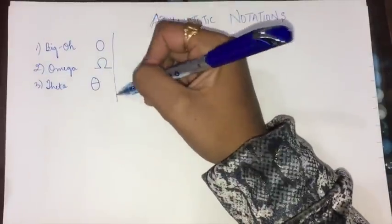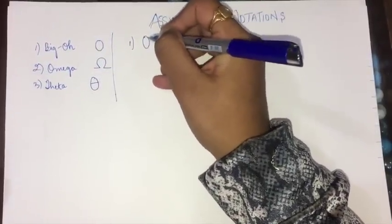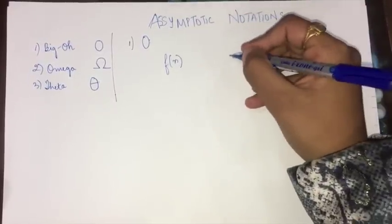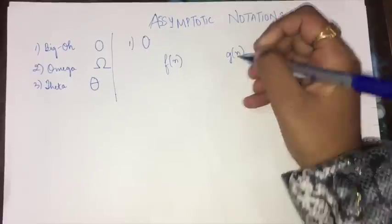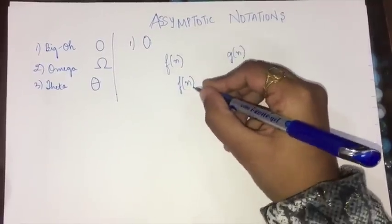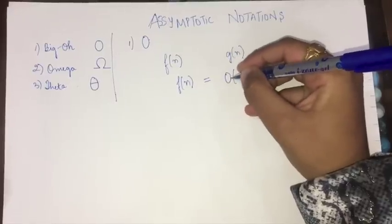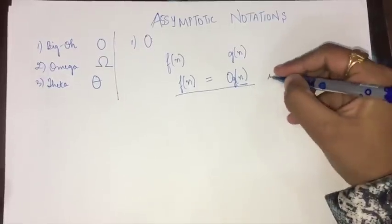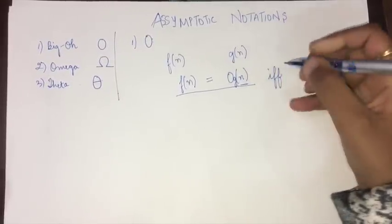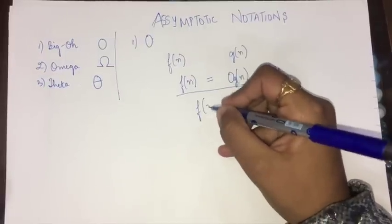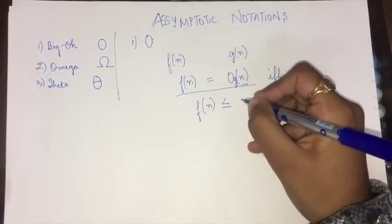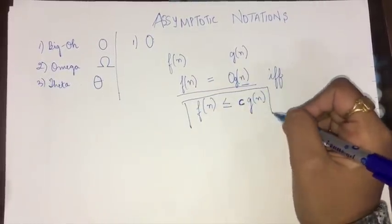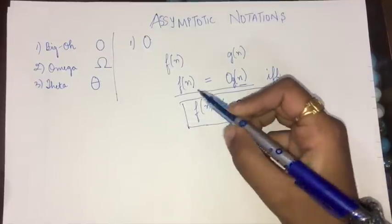Let's talk about the Big O notation. Suppose we have two functions: f(n) and g(n). We say that f(n) is Big O of g(n) if and only if f(n) is less than or equal to some constant c times g(n).